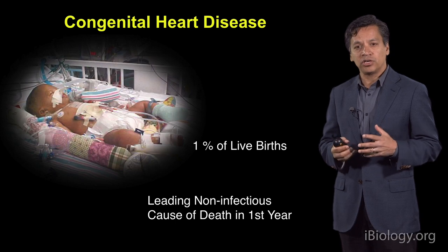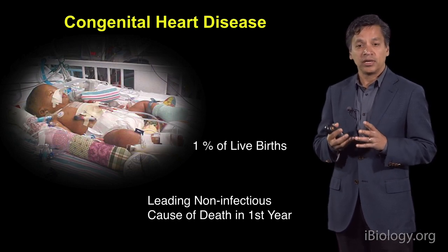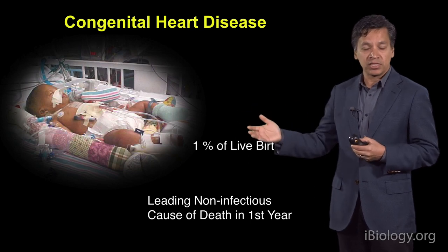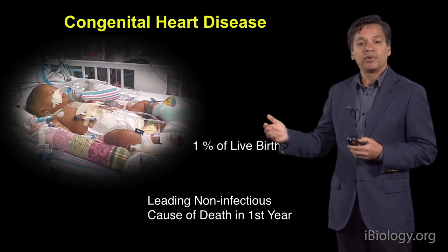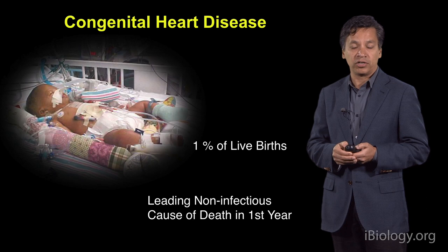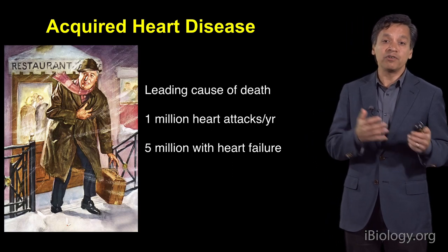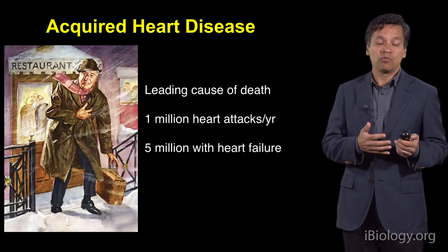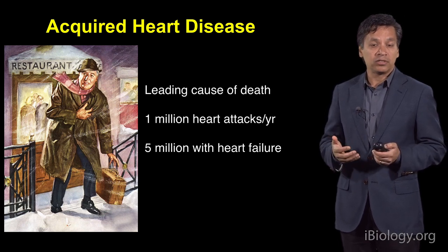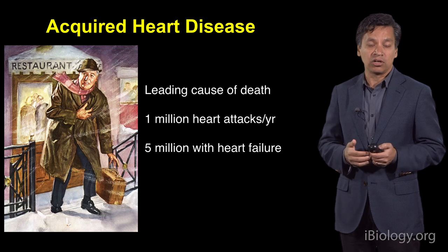It's been our hope that if we understood how nature normally forms a heart in an embryo, that it might inform us about this disease, but it also might inform us about a different kind of heart disease — the type that occurs in adults, which is very different from what I just mentioned. In adults, heart disease across the world is now the leading cause of death.